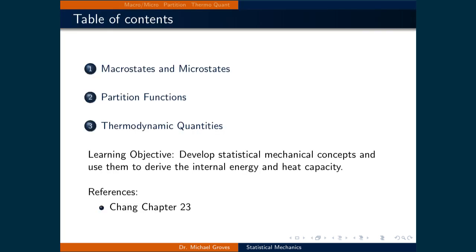This lecture will be broken down into three parts. First, we will define macrostates and microstates. Second, we will quantify what is a partition function, and present the partition functions for translational, rotational, and vibrational types of motion. Finally, we will derive the internal energy of a system based on the partition functions that define it, and apply it to a monatomic gas.